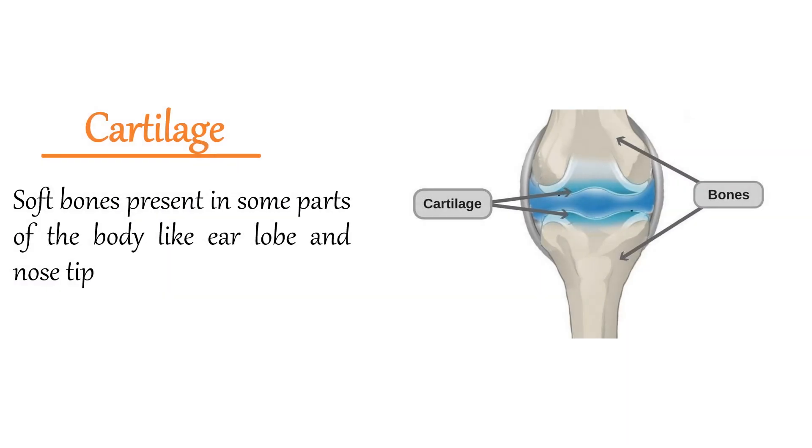Cartilage: Soft bones present in some parts of the body, like ear lobes and nose tip.